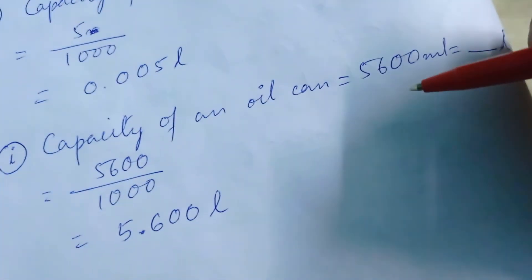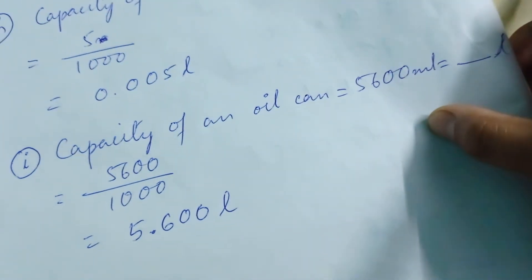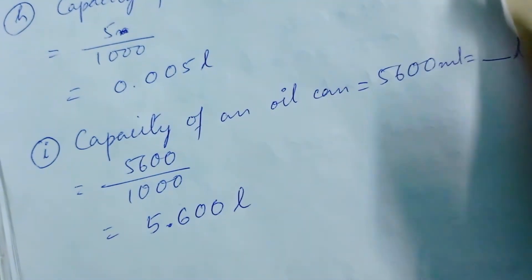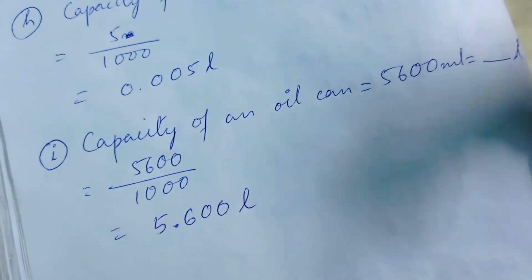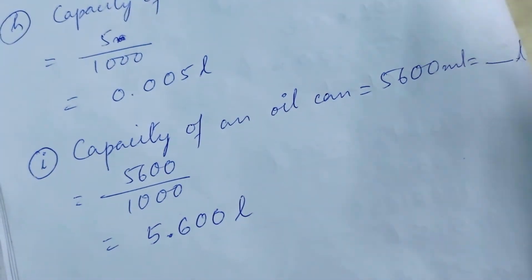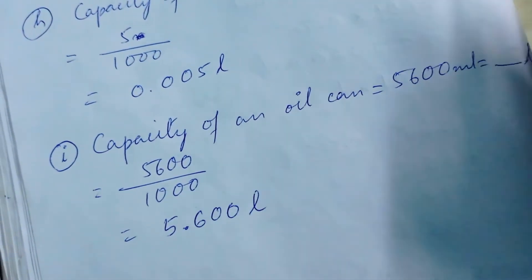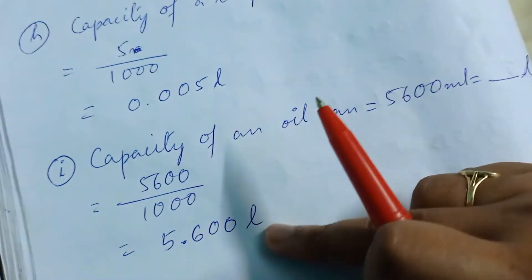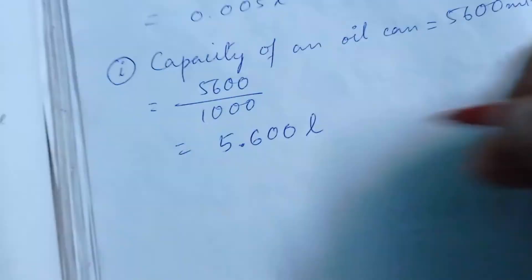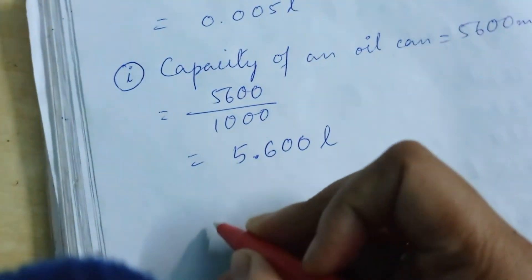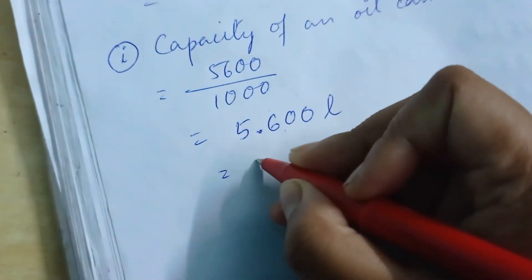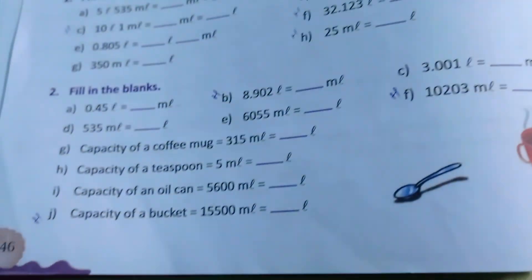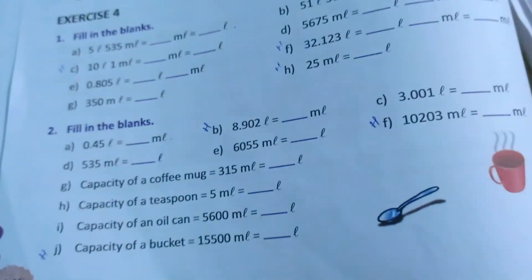For question I, the capacity of an oil can is 5600 ml — how many liters? Again, divide by 1000. All these questions are similar; you just need to remember: liter to milliliter — multiply by 1000; milliliter to liter — divide by 1000. If you remember that, you can solve these very easily. So 5600 divided by 1000 is 5.600 liter, which equals 5.6 liter. Question J is homework. Thank you for watching.